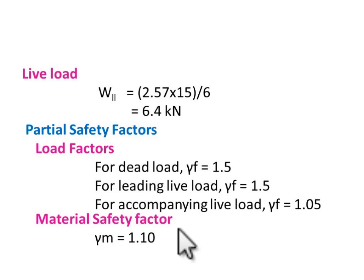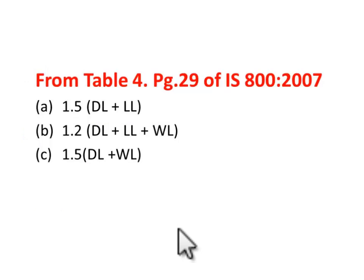Similarly, the live load concentrated value is 2.57 × 15 / 6 = 6.4 kN per panel point. Partial safety factors are applied: for dead load γf = 1.5, for live load γf = 1.5, for accompanying live load it is 1.05, and the material safety factor γm = 1.1.